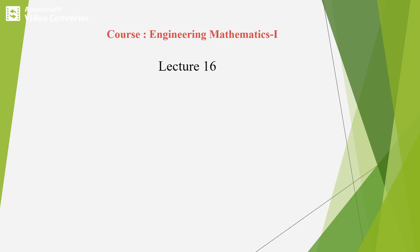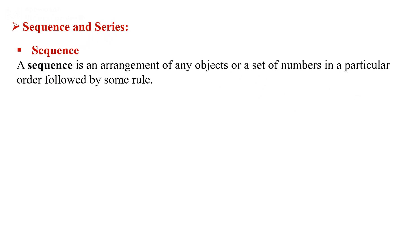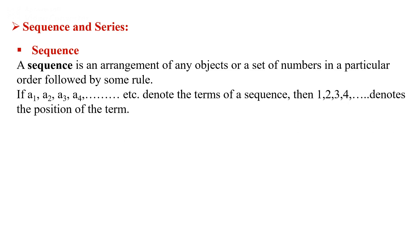Hello everyone, this is lecture 16. In this lecture I explain the concept of convergence of sequence and series. First you have to know the basic concept of sequence and series. A sequence is an arrangement of any object or set of numbers in a particular order followed by some rules. If you take a1, a2, a3, a4, etc., these denote the terms of the sequence, and the subscripts denote the position of each element.